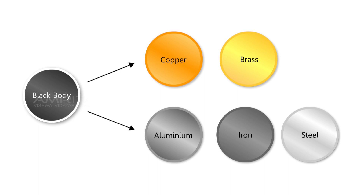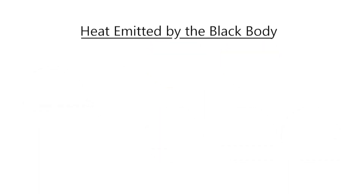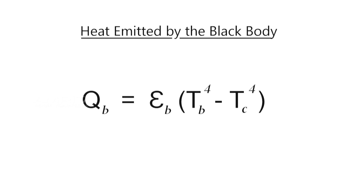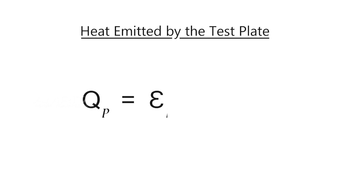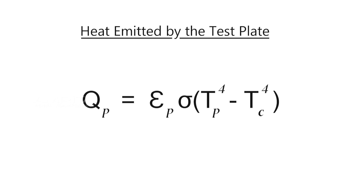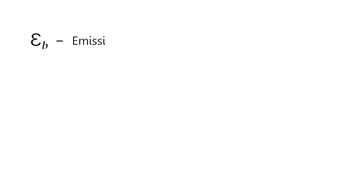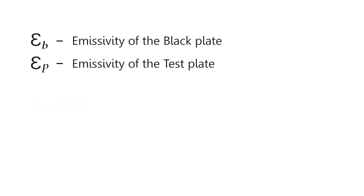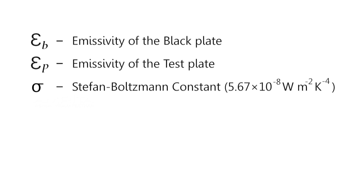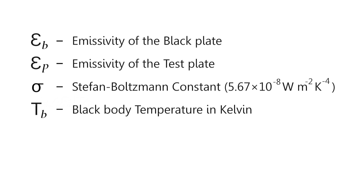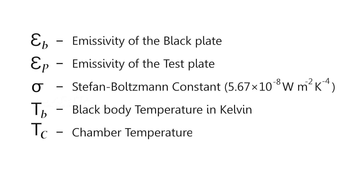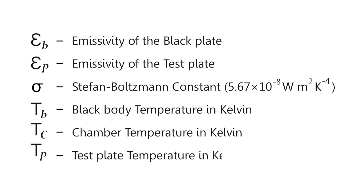Heat emitted by the black body: Q_b = ε_b · σ · (T_b⁴ − T_c⁴). Heat emitted by the test plate: Q_p = ε_p · σ · (T_p⁴ − T_c⁴). Where ε_b is the emissivity of the black plate, ε_p is the emissivity of the test plate, σ is the Stefan–Boltzmann constant (5.67 × 10⁻⁸ W·m⁻²·K⁻⁴), T_b is the black body temperature in Kelvin, T_c is the chamber temperature in Kelvin, and T_p is the test plate temperature in Kelvin.